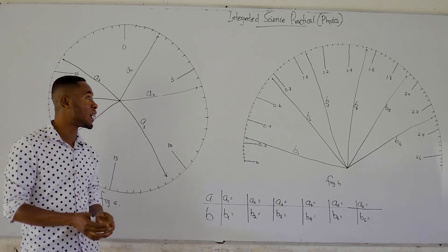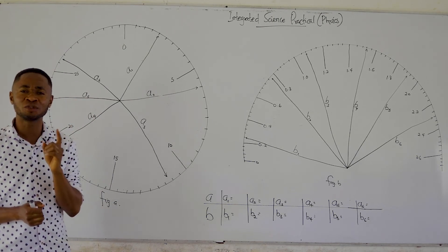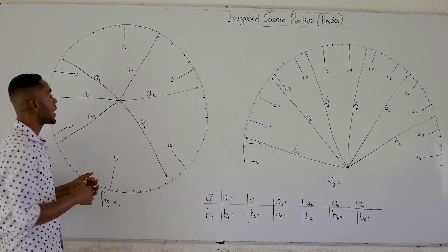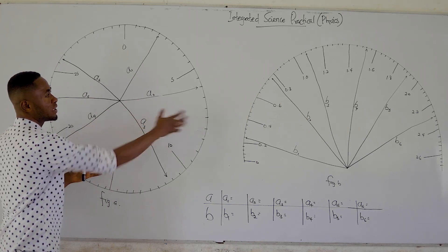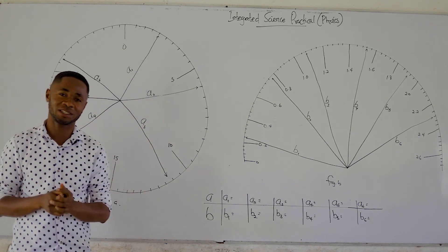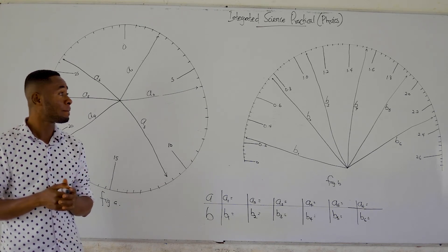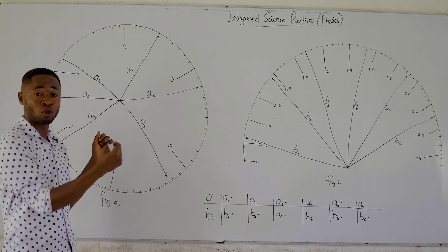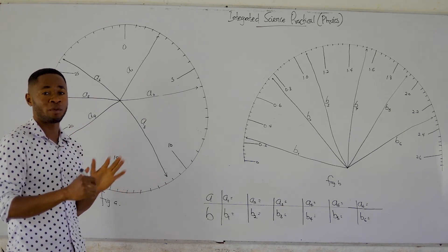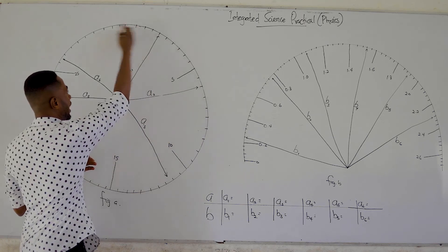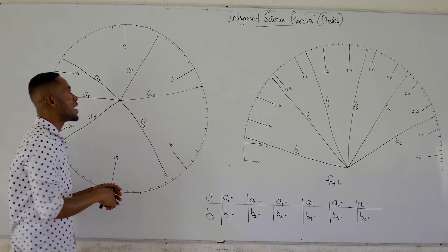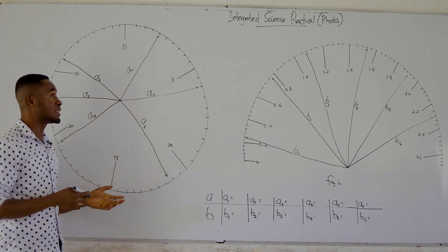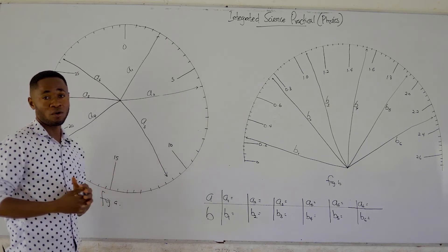Hello students, welcome once again to ChemStry. In one of our videos, I saw in the comment section that some students requested that I teach a shortcut to solving integrated science practical questions. I followed up and the students said with straight lines they just use a simple long ruler to measure and have no problems, but with things that look like a clock or a semicircle with graduations, that is where they have problems.